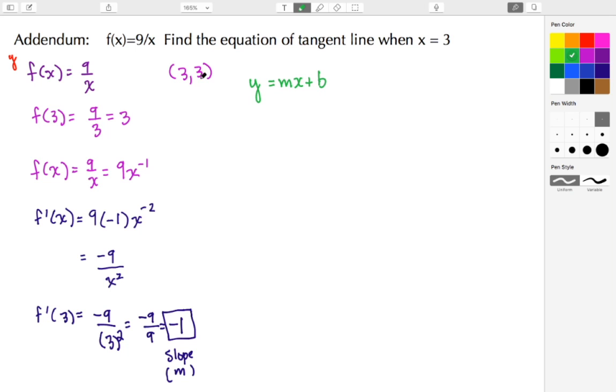Well, we know y to be the value of 3. We just figured out m or the slope to have a value of negative 1. They gave us or told us that the value of x is 3 and we're trying to figure out the value for b. So we begin to simplify. So I have 3 is equal to negative 1 times 3 is negative 3 plus b.